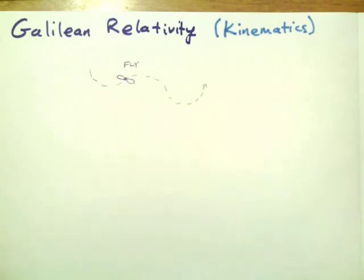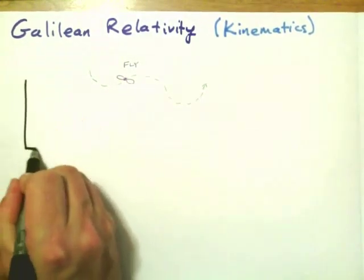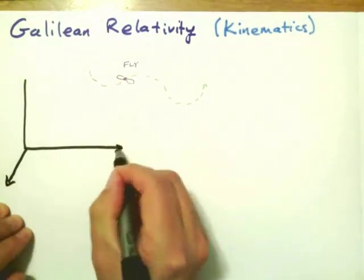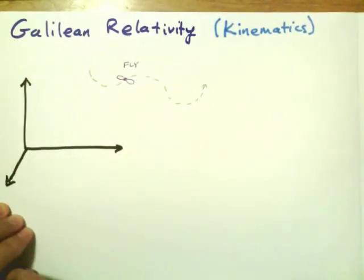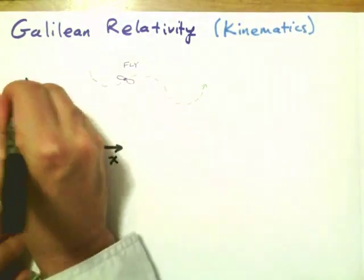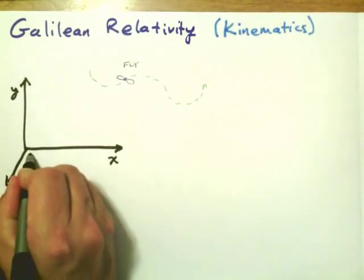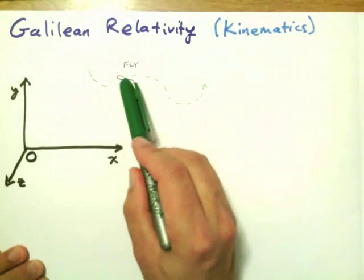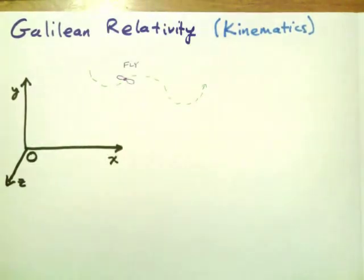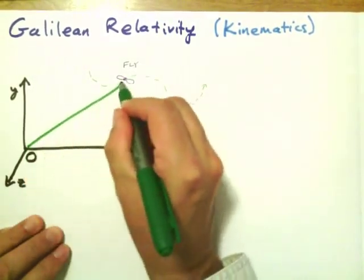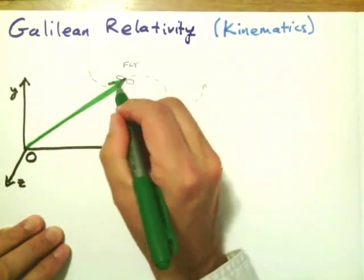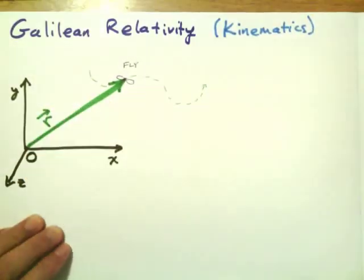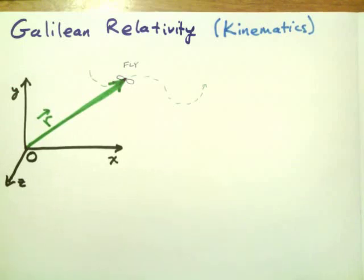So if we want to describe the kinematics of the fly, we need a coordinate system. We put a coordinate system down with the usual labels x, y, and z. We'll label this coordinate system O — the original coordinate system, which is at rest in the room relative to the fly. When I talk about the position of the fly, I can draw a position vector, which I'll label R, corresponding to its position.